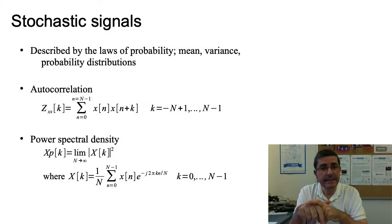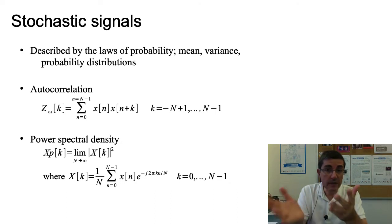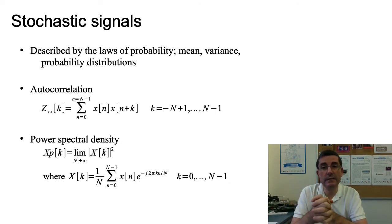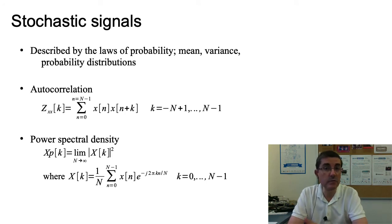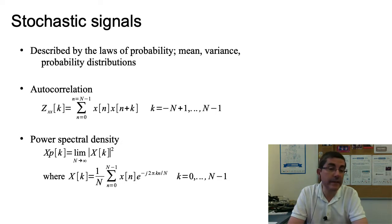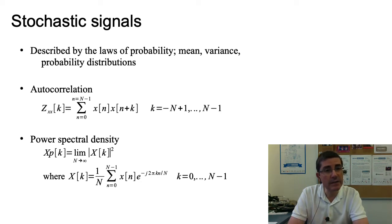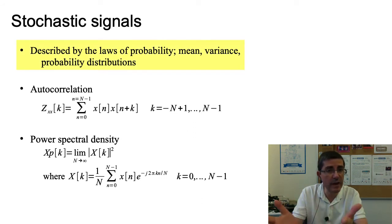What is a stochastic signal? A stochastic signal cannot be described in a deterministic way — it can only be described probabilistically. The field of statistical signal processing deals with this type of signals, and it is a quite advanced topic. Here we will give a very broad approach, which is sufficient for our needs. In statistical signal processing, we talk about the laws of probability as a way to describe these stochastic signals.